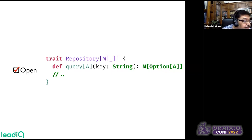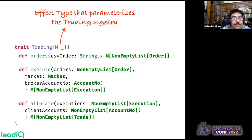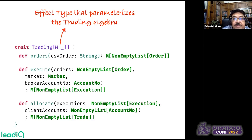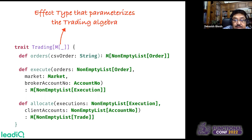An algebra needs to be open — for example, for an algebra of a repository, we can have multiple implementations, so an algebra must be open to interpretation or implementation. Here is an example from real-world code: an implementation of a trading system. The module is parameterized on a carrier type M, which we call the effect type. This effect type parameterizes the trading algebra. To implement trading functionalities, we need three functions: orders, execute, and allocate.